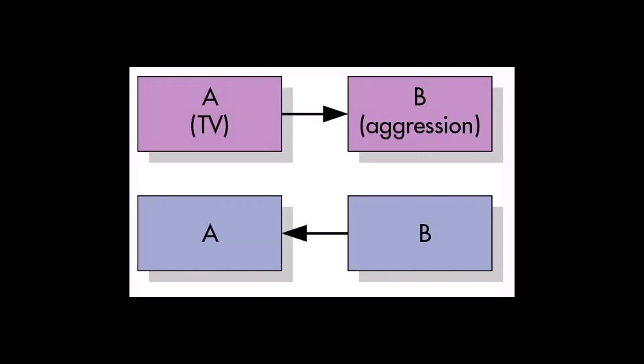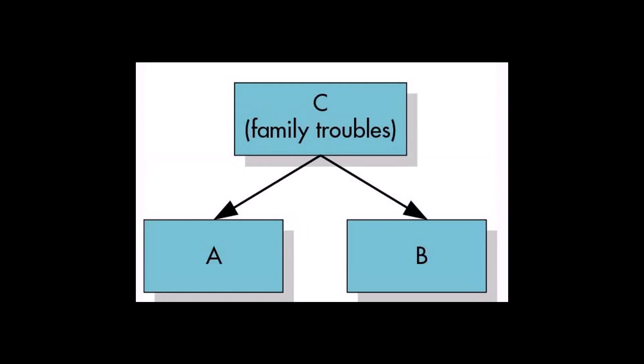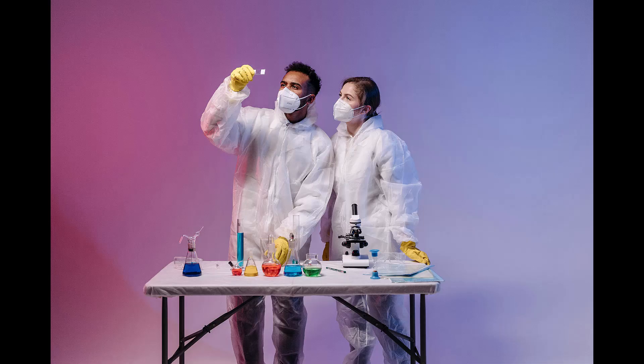The main disadvantage of this method is that it doesn't allow us to infer causation. That's because we don't manipulate any variables or use a control group. We can't be sure whether variable A caused the change in variable B, or vice versa. It could also be that a third variable is the real cause of the observed changes. Only an experiment can help us understand causation.